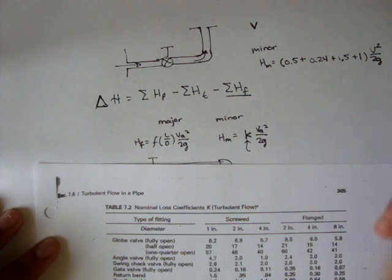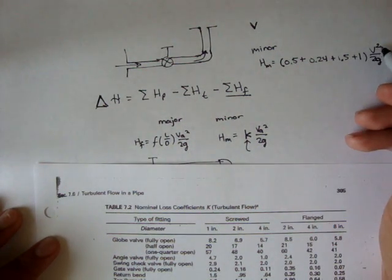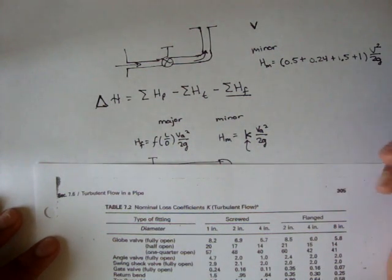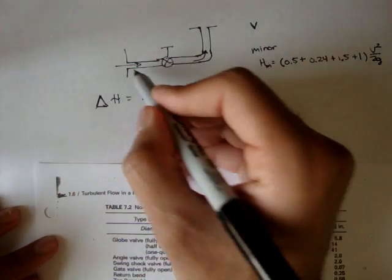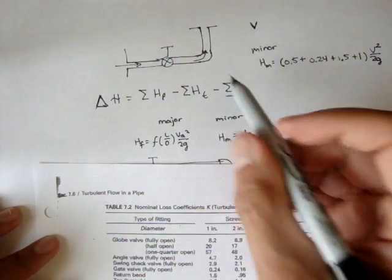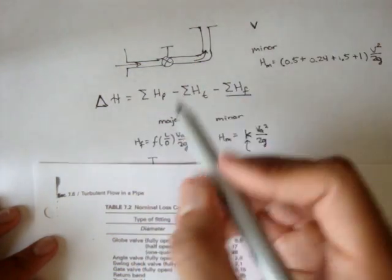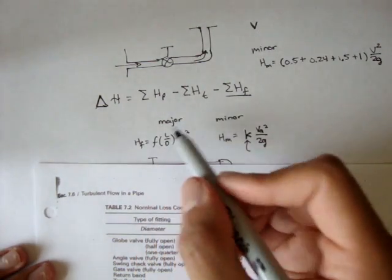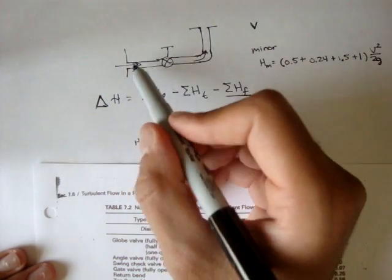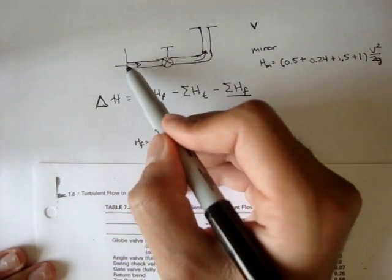So, if you add all this up, multiplied by the average velocity squared over 2G, you would get the minor losses associated with this system. And you would add that to the major losses associated with this system. Remember, major losses are associated with pipe length. So, major losses, you don't have to worry about the entrance, the devices, whether there's valves, elbows, and anything else. It's just pipe length.